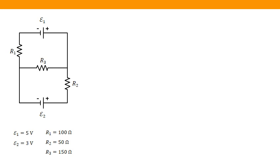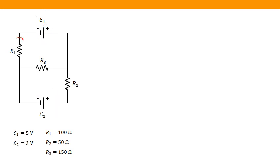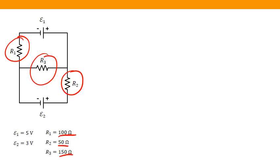Now let's go through an example. I've got a circuit with two batteries: the first has a potential of 5 volts, the second has a potential of 3 volts. I also have three resistors: R1 is 100 ohms in the top branch, R2 is 50 ohms in the bottom branch, and R3 is 150 ohms in the middle branch.